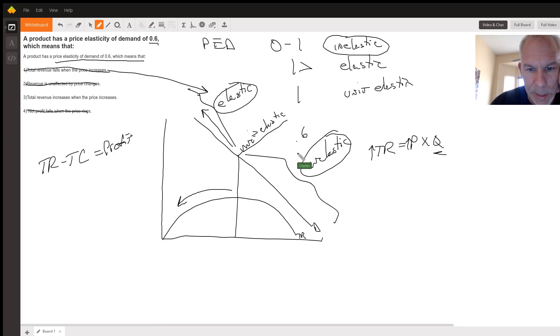What we know is we have inelastic demand. 0.6 is inelastic. And when the price goes up, we know that total revenue can go up also. So that's why three is our answer.